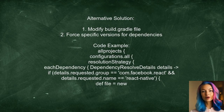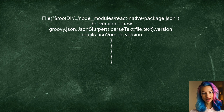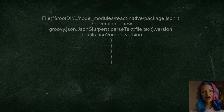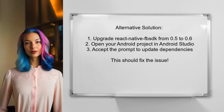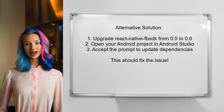One user suggests modifying your build.gradle file to enforce specific versions for all dependencies related to React Native. This approach helps resolve version conflicts by ensuring the correct version is used throughout your project. Another user suggests that if you've upgraded React Native FBSDK from version 0.5 to 0.6 and encountered this issue, open your Android project in Android Studio — the IDE will automatically prompt you to update your dependencies, which should resolve the problem.